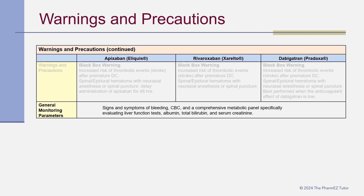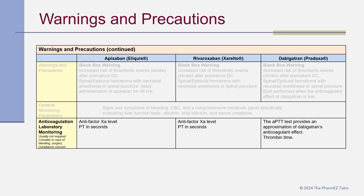General monitoring parameters for DOACs include checking for signs and symptoms of bleeding and drawing CBC, CMP (specifically evaluating liver function tests, albumin, total bilirubin), and serum creatinine. Routine anticoagulation laboratory monitoring is usually not required; however, it can be considered in cases of bleeding, surgery, or compliance concern. For apixaban and rivaroxaban, an anti-factor Xa level or prothrombin time can be used. For dabigatran, the aPTT provides an approximation of anticoagulant effect, and thrombin time can also be used.